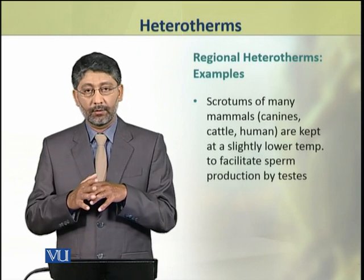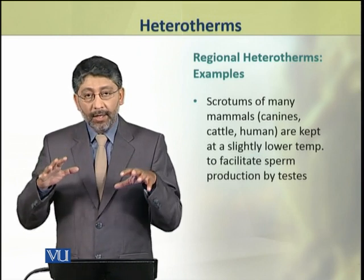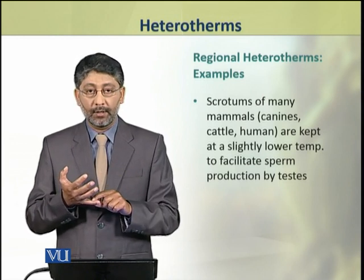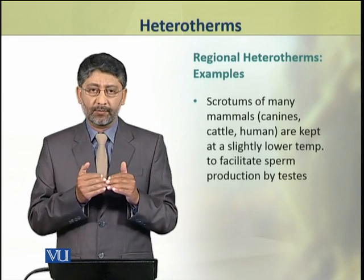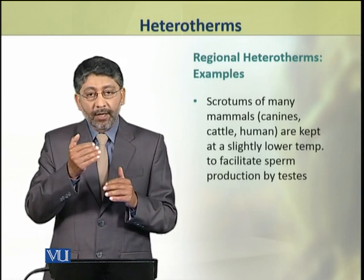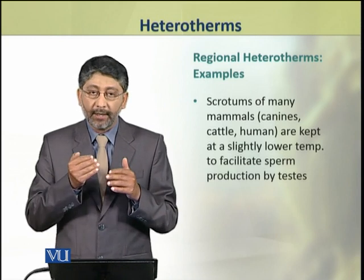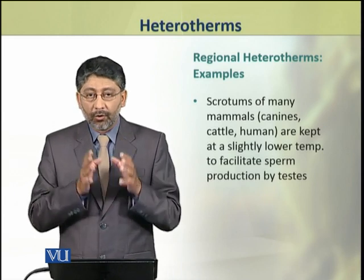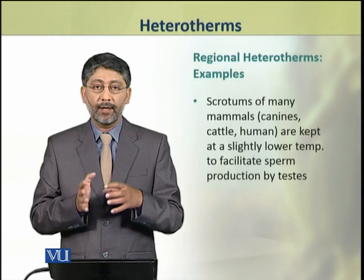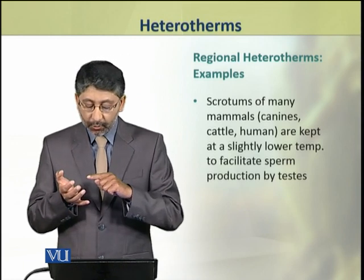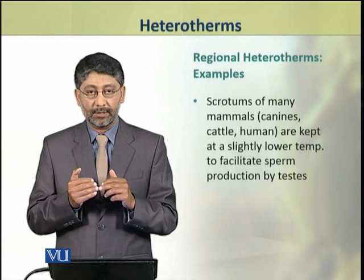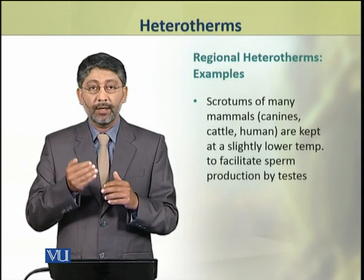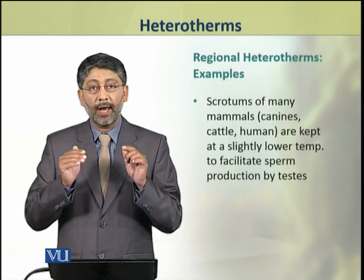Dear students, many mammals, for example canines, cattle, and humans, have the temperatures of their scrotums comparatively lower than the core body temperatures. Yeh jo slightly lower temperature scrotum mein maintain kia jata hai, that helps to facilitate sperm production by the testes. Is tari se yeh endothermic animals mein bhi hame example milti hai regional heterothermy ki.